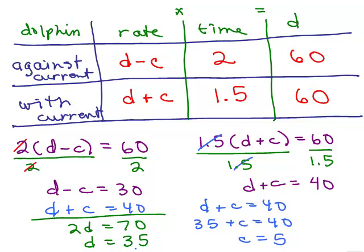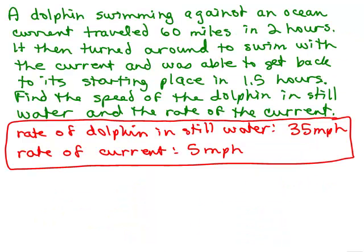Now I've got to go make sure that this makes sense given the original problem. So we got that the rate of the dolphin in still water should be 35 miles per hour and the rate of the current will be 5 miles an hour and let's see if that makes sense.